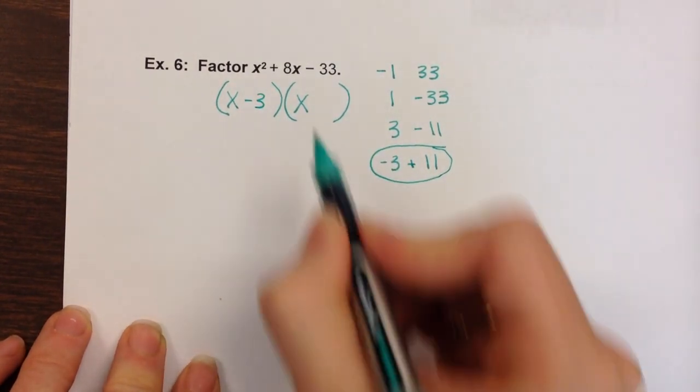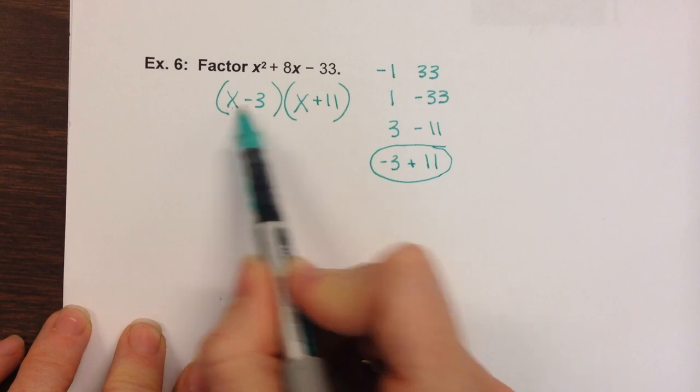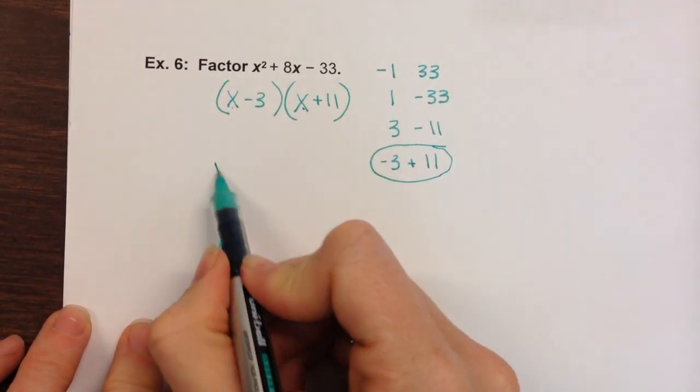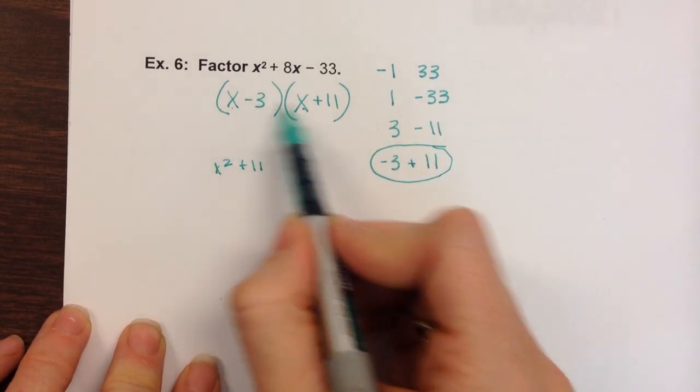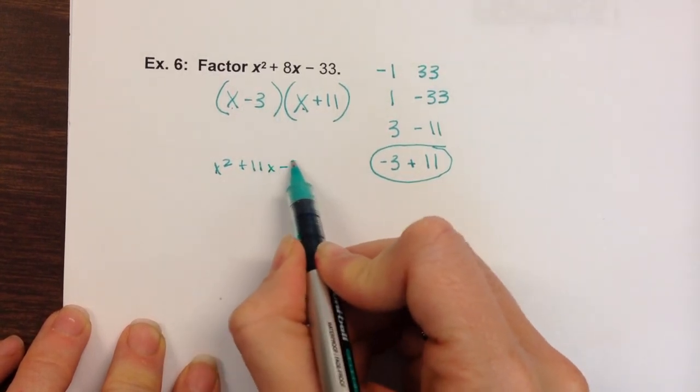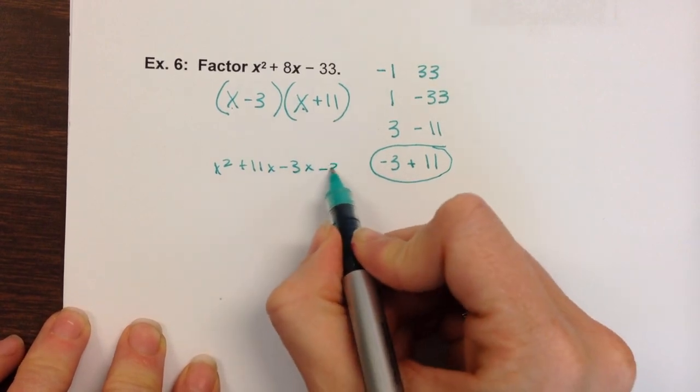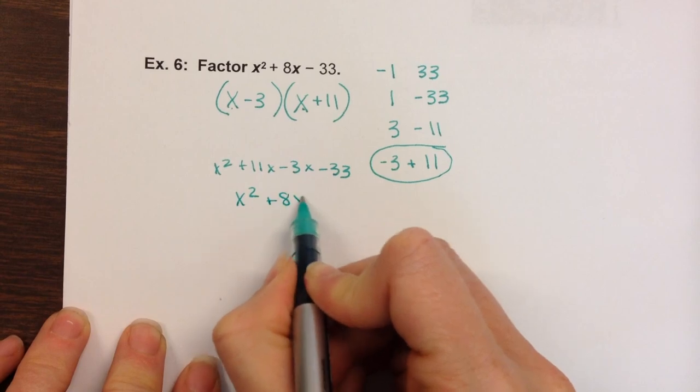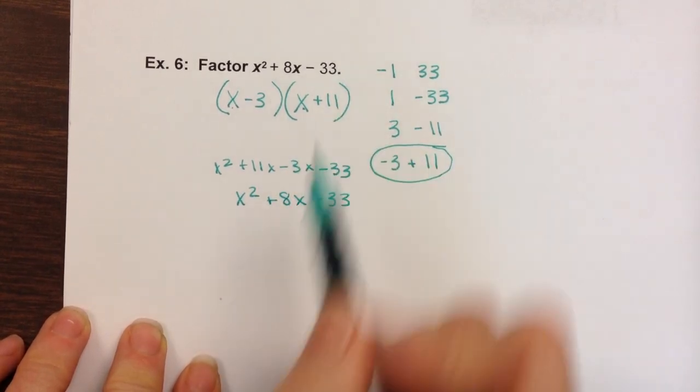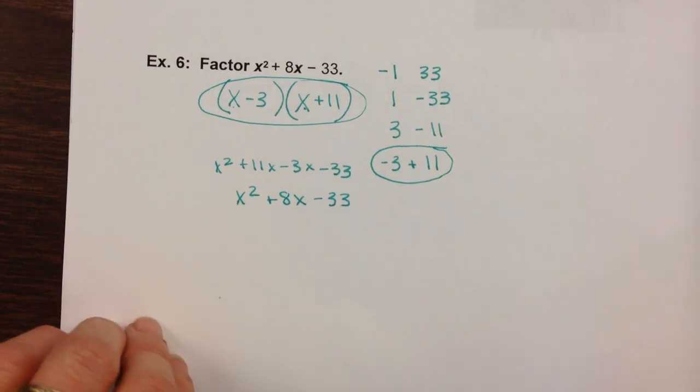So I would write minus 3 and plus 11. I could check myself by multiplying: x times x is x squared, x times 11 is 11x, negative 3 times x is negative 3x, and negative 3 times positive 11 is negative 33, which simplifies to the same thing that I started with. So this would be my polynomial in factored form.